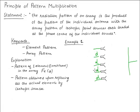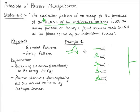How can the principle of pattern multiplication help us? It says that it is easy to calculate the array pattern if you know the pattern of the individual antenna. If you have made this array, you must know the radiation pattern of the individual constituent element — in this case, the horn antenna. That becomes our first key point: the element pattern.